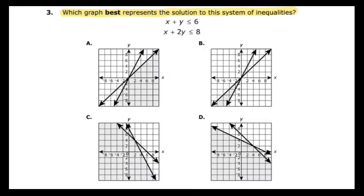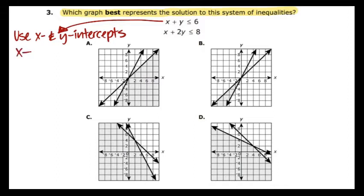Which graph best represents the solution to this system of inequalities? We have two equations: x plus y is less than or equal to 6, and x plus 2y is less than or equal to 8. I'm going to take the top equation and graph it using x and y intercepts. When you graph an inequality, you can replace the inequality, in this case less than or equal to, with an equal sign to figure out how to graph it.